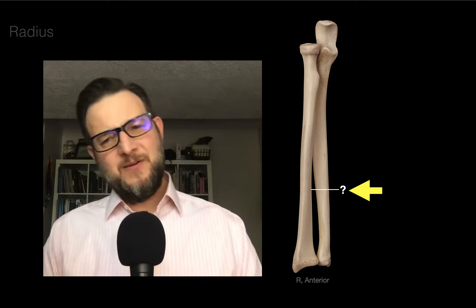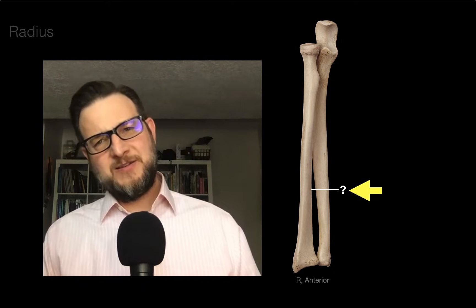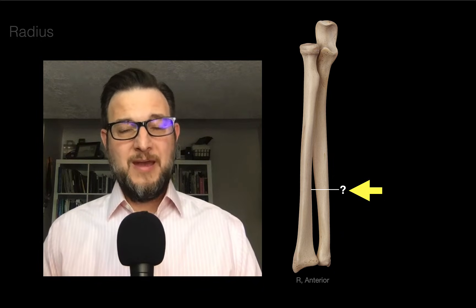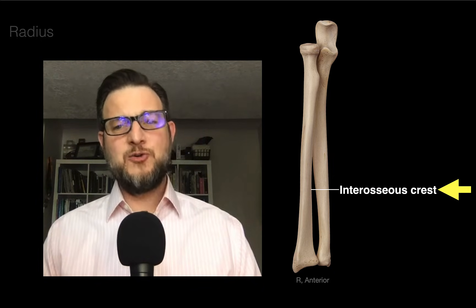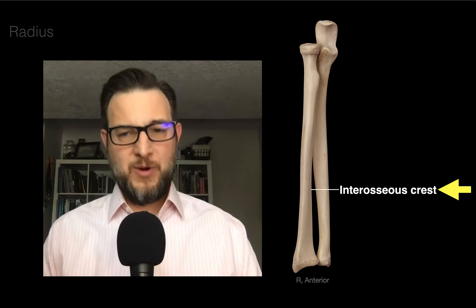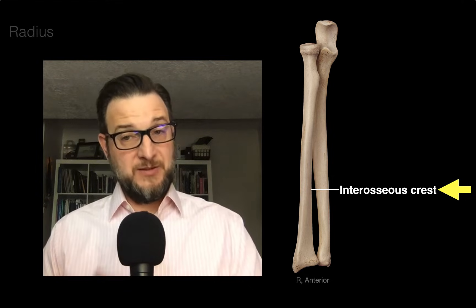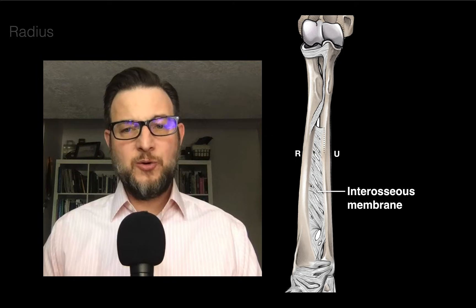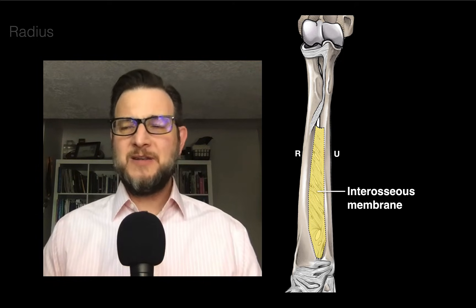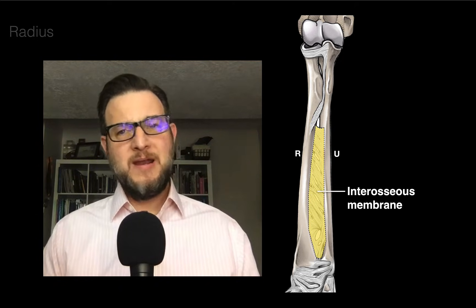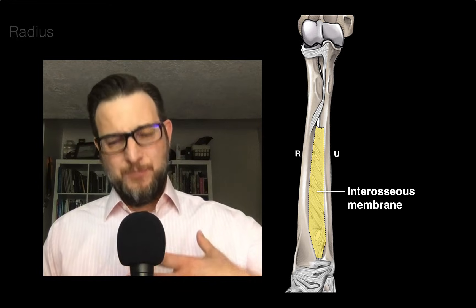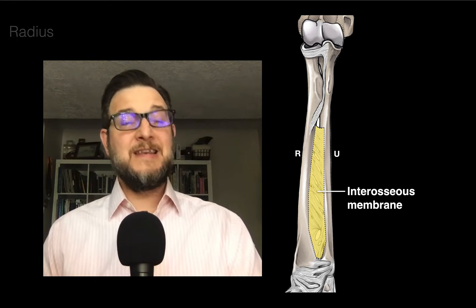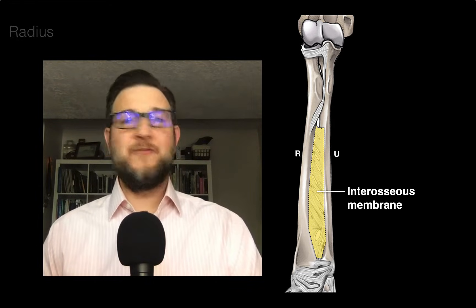There is a crest on the radius and also on the ulna between these two bones. They called this the interosseous crest — between the osseous, the bones — which serves as the attachment for the interosseous membrane. This interosseous membrane tethers, bridges, and knits the radius and ulna together, making this a syndesmosis fibrous joint.